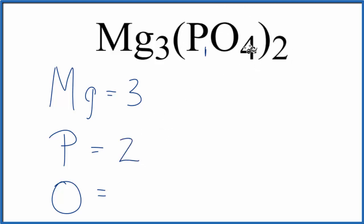Two times the four, eight oxygen atoms. If we wanted to know the total number of atoms in Mg3PO42, eight plus two is ten, plus three, so thirteen. Thirteen total atoms in magnesium phosphate.